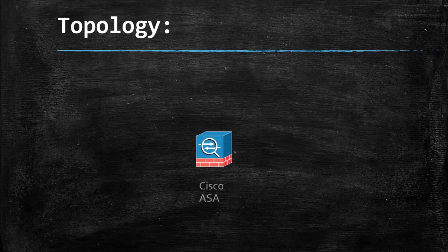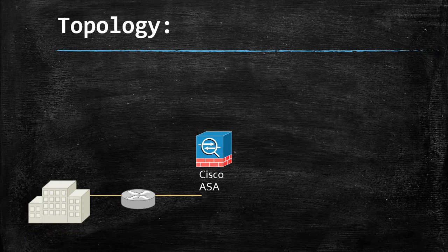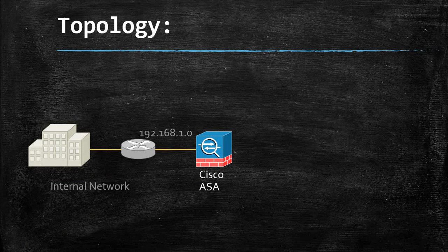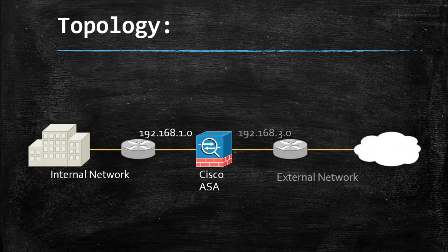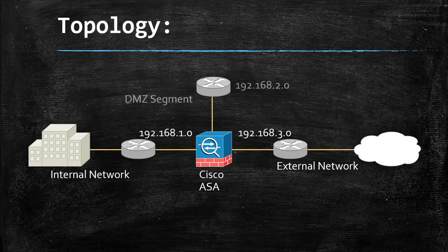Let's check the topology. This is our Cisco ASA, our internal network, our external network, and the DMZ segment.